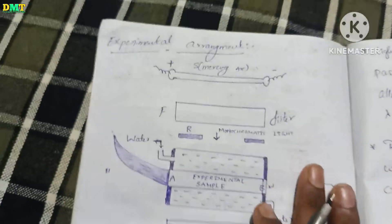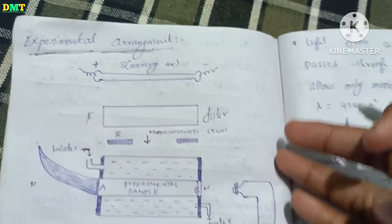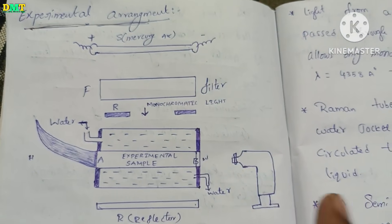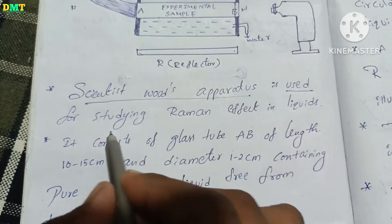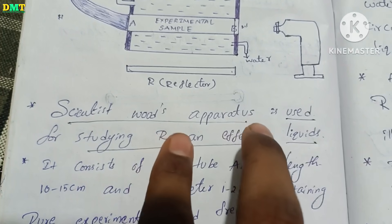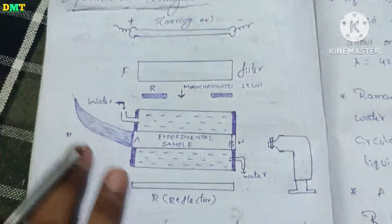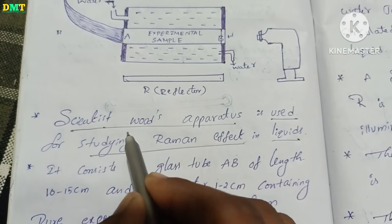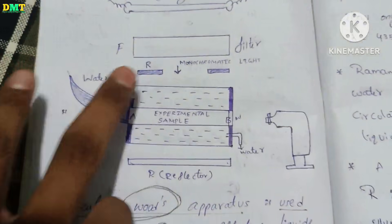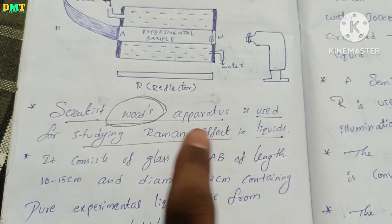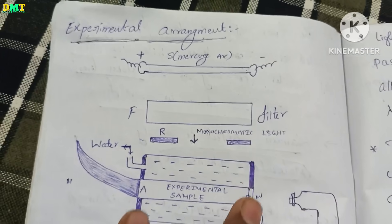The first experiment arrangement, that is the Raman effect experiment, will prove this step by step. Wood's apparatus is used for studying the Raman effect in liquids. This is called Wood's apparatus, named after the scientist Wood.